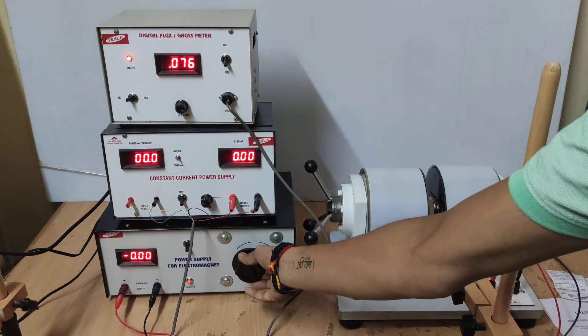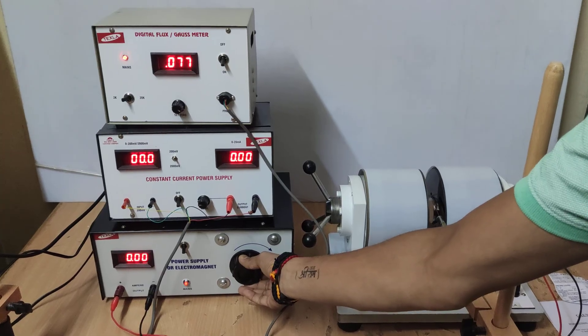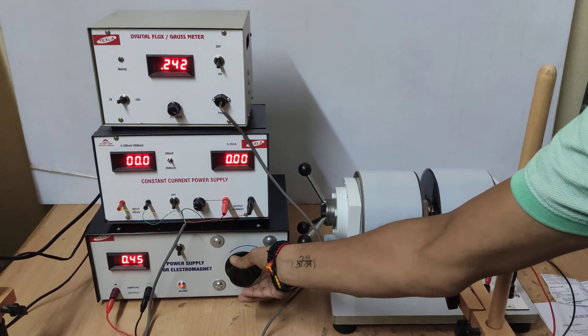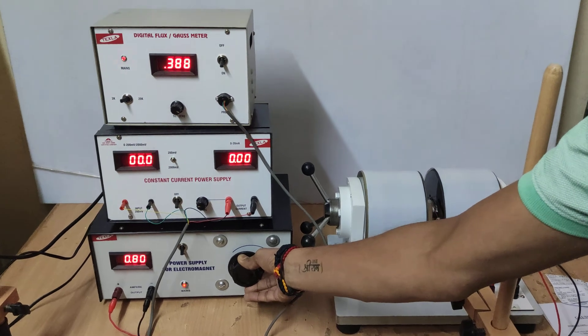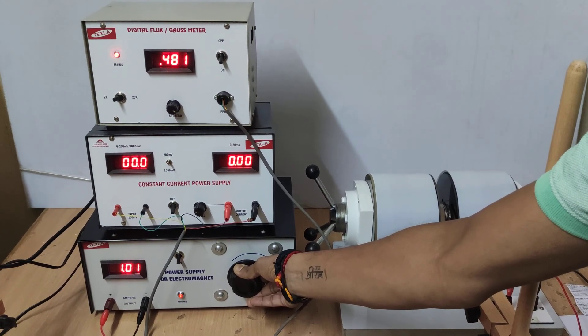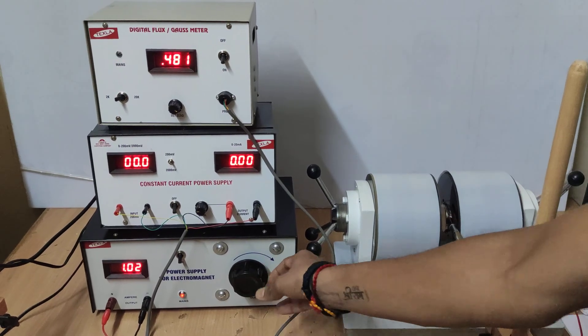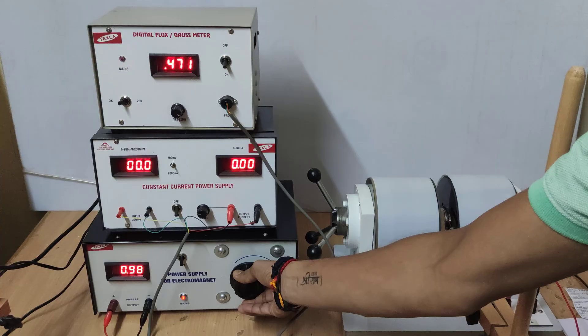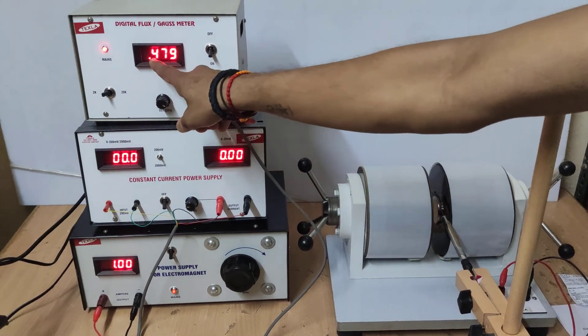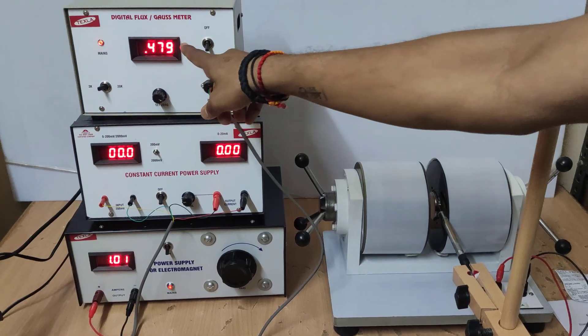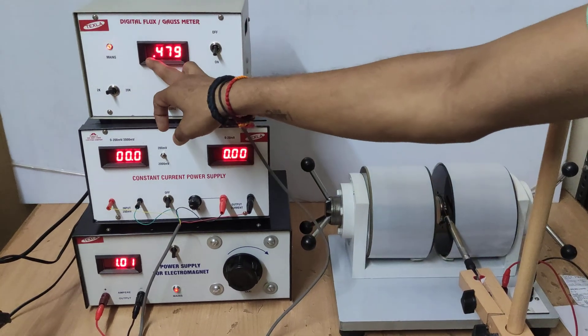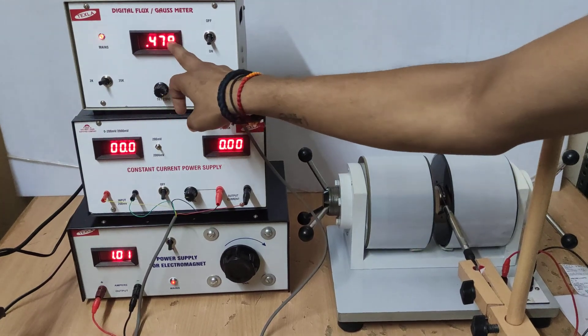Here, with the help of this knob I am applying current to the magnetic field and now I am applying 1 ampere. This is my 1 ampere current. 1 ampere current is applied to electromagnet and respectively I am writing the gauss, that is 0.479 kilo gauss, or else you can even note it as 479 gauss. If you are using the decimal then you need to write it as 0.479 gauss.